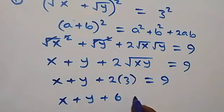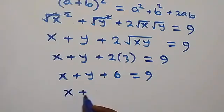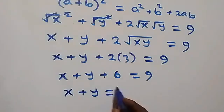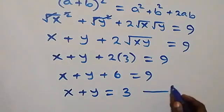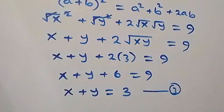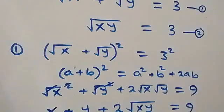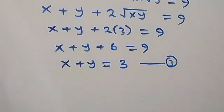That gives us x + y + 6 = 9, so x + y = 9 − 6 = 3. Let's label this as equation three.